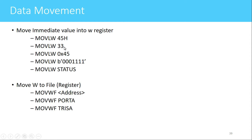Another example is MOVLW 33, where 33 decimal is copied to the working register. MOVLW 0x45 is the same as MOVLW 45h — just a different representation. You can also write MOVLW B'00011111' to load a binary value into the working register. Finally, MOVLW STATUS copies the contents of the STATUS register into the working register. These are examples of immediate data movement instructions in PIC16F877.